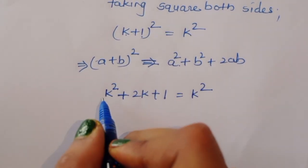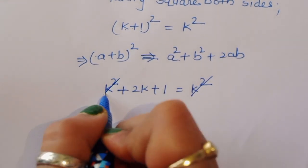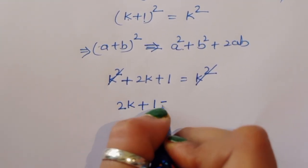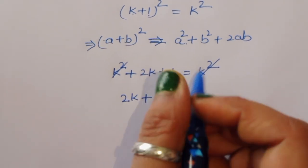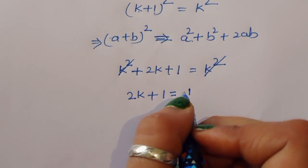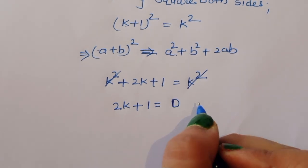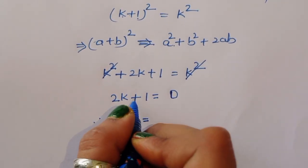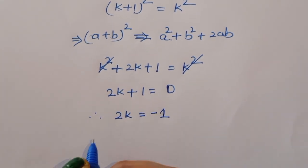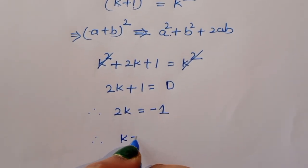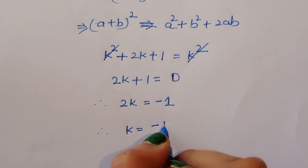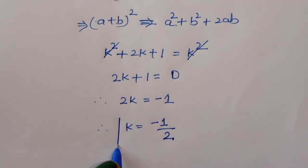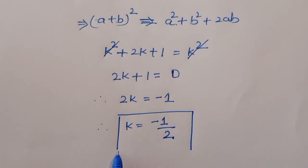Now k² and k² cancel. Therefore 2k + 1 is equal to 0. Therefore 2k is equal to minus 1. Therefore k is equal to minus 1 by 2. This is the value of k — k is equal to minus 1 by 2. This is the first method.